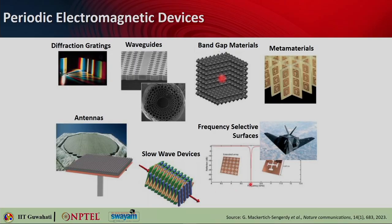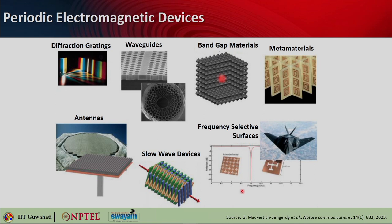You can also make frequency selective surfaces useful for stealth applications. So, starting from optical branches to data communication on chip, data communication over cables, resonator cavities, metamaterials, antennas, and frequency selective surfaces — all these applications use periodic electromagnetic structures. That is why it is very important to understand these structures in a little bit of detail, and that is the reason why we are discussing photonic crystals as the first example of periodic devices in this course in some depth.